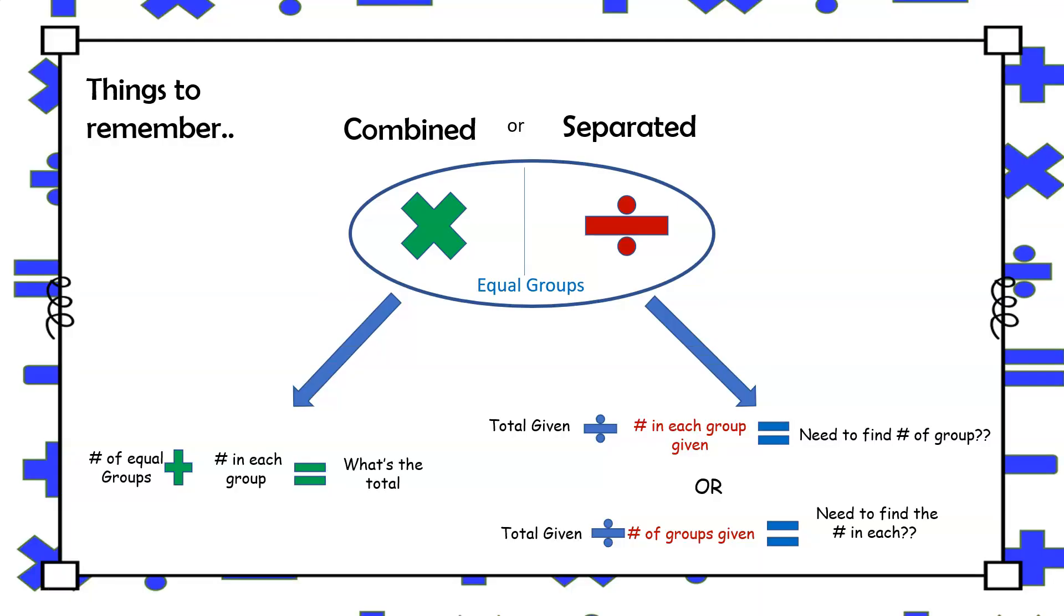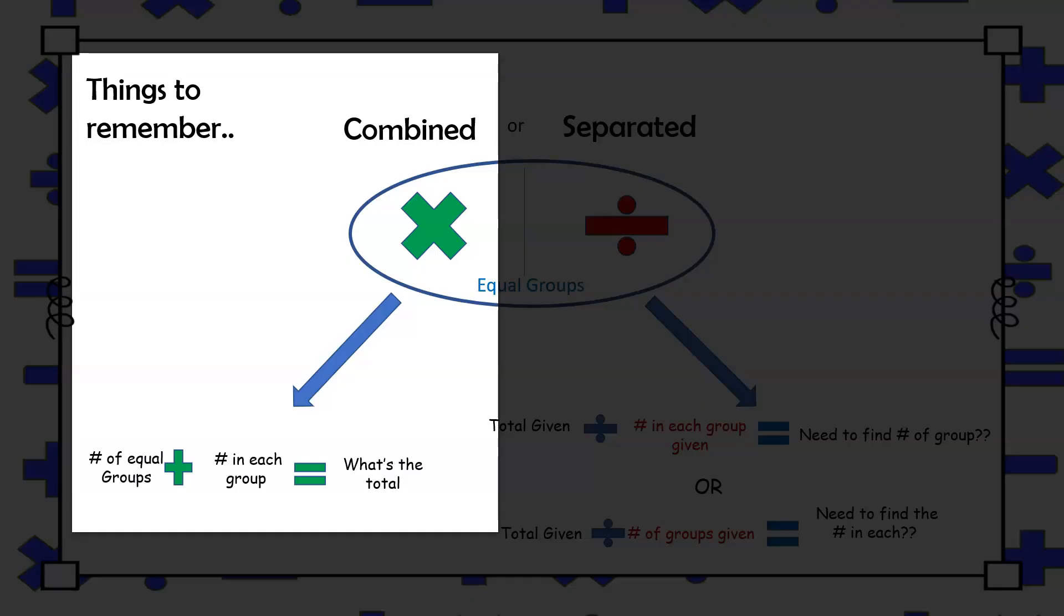When reading a word problem, students need to recognize that when an equal number of groups plus the number in each group is given, and finding the total is required, then multiplication should be used.